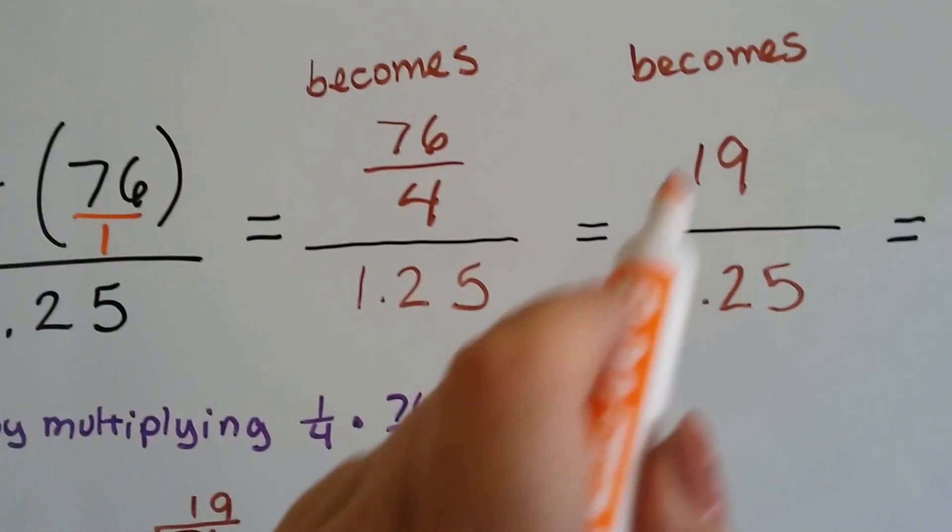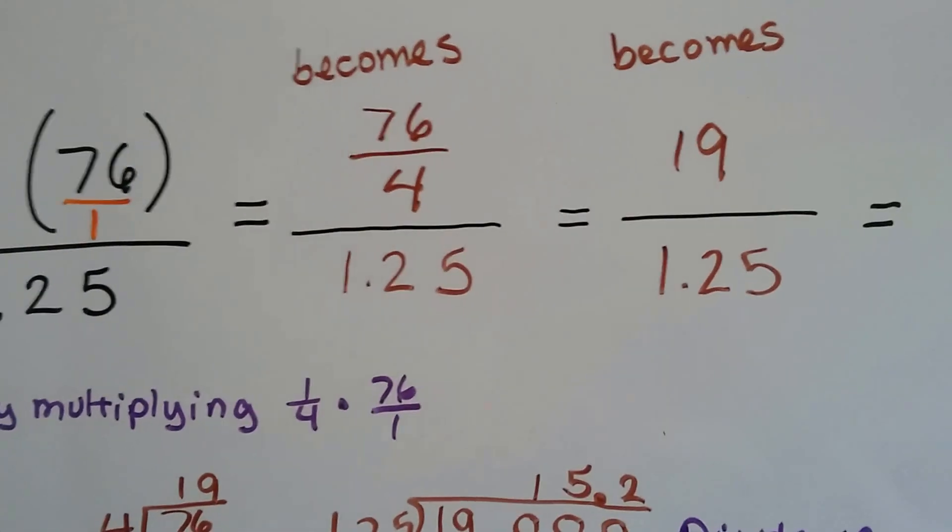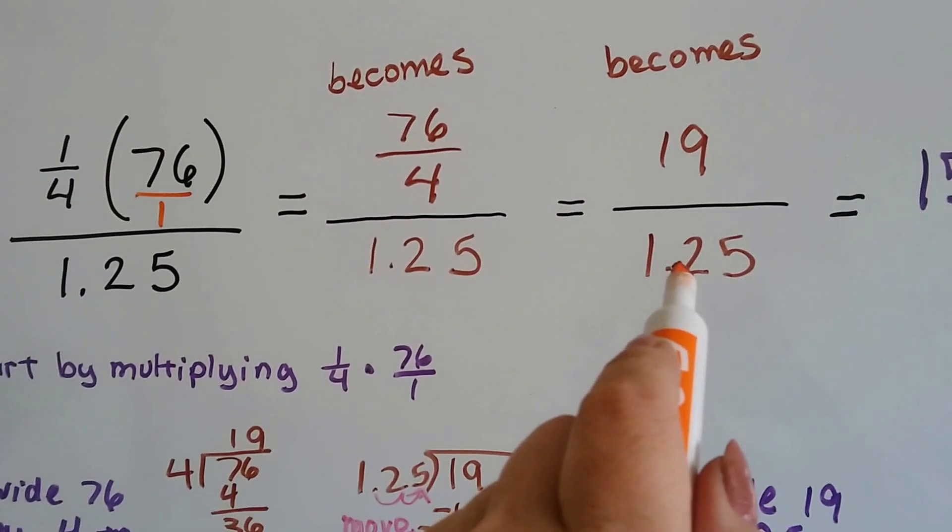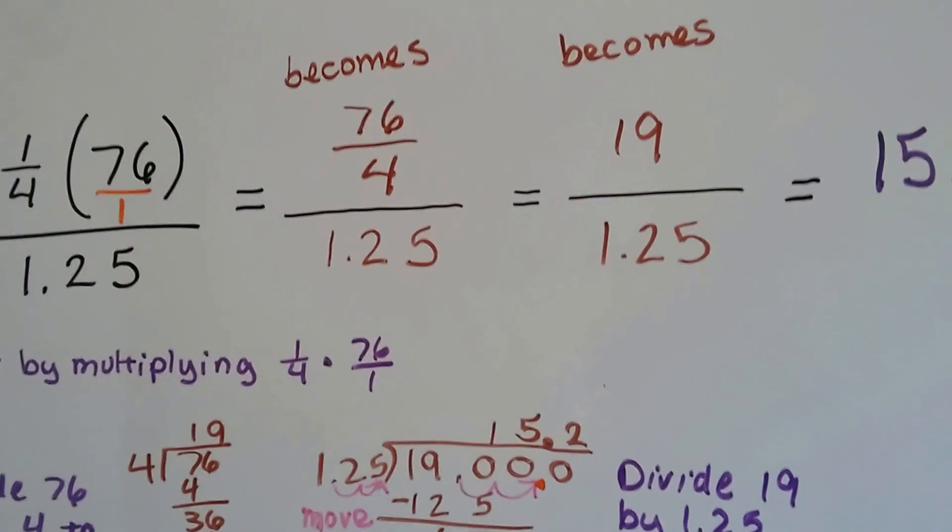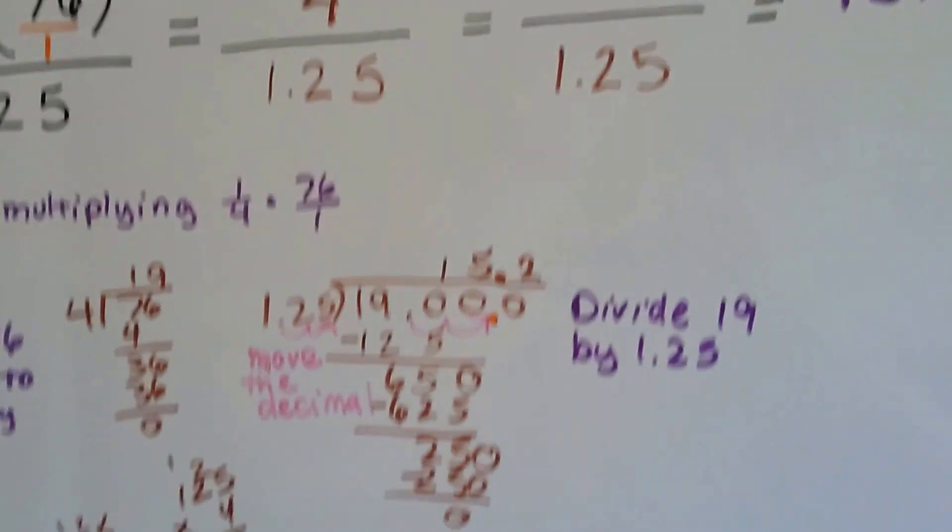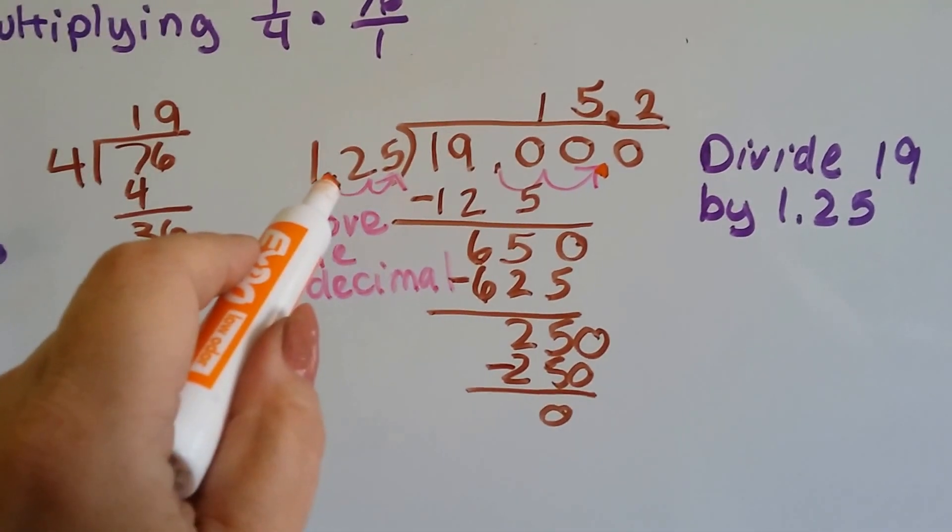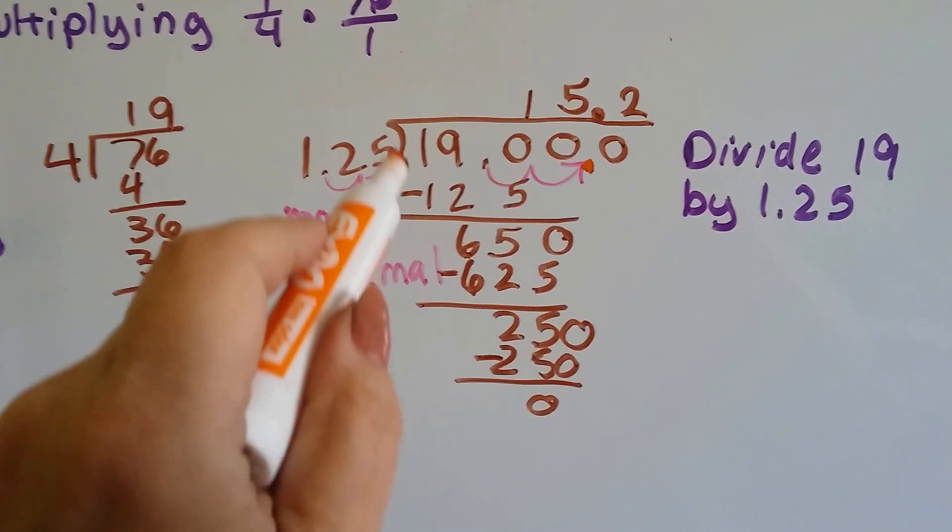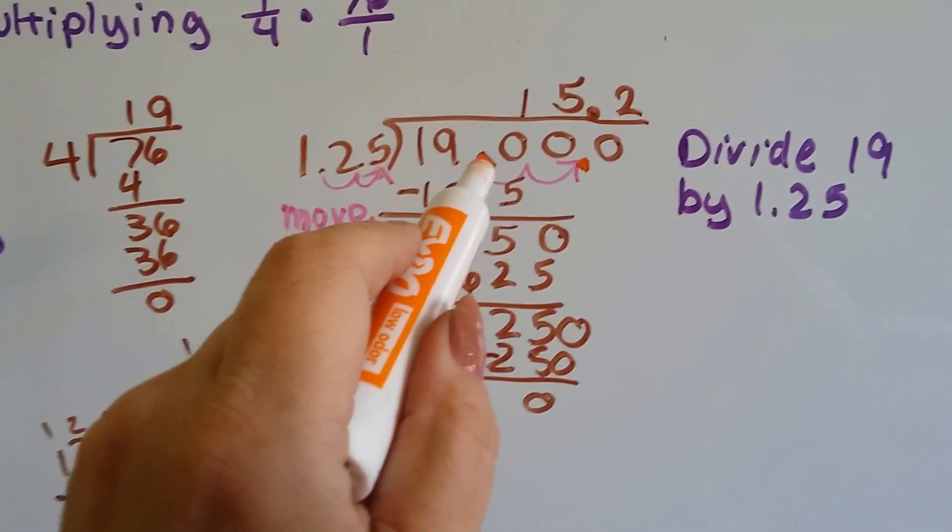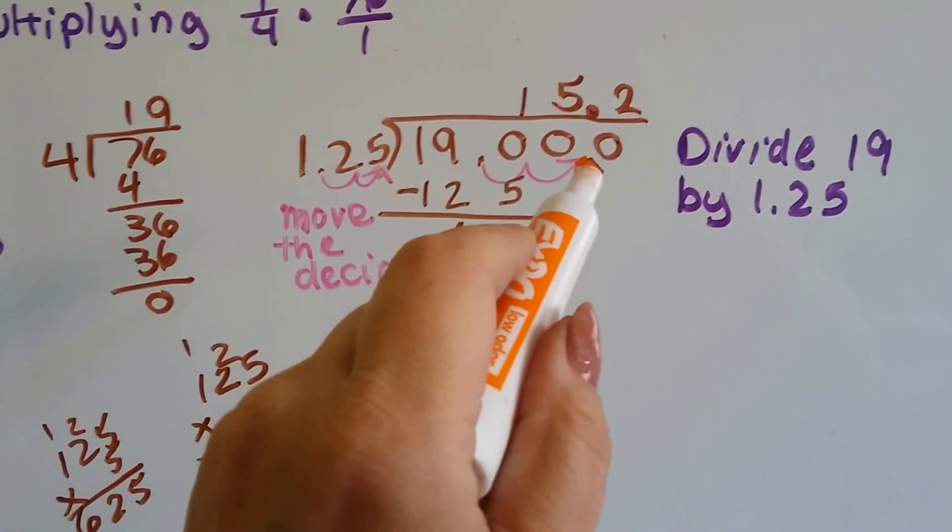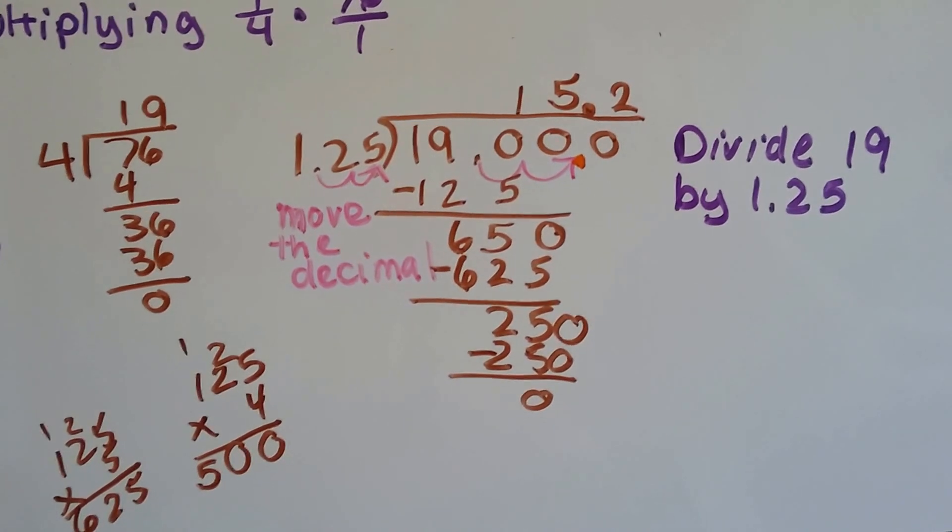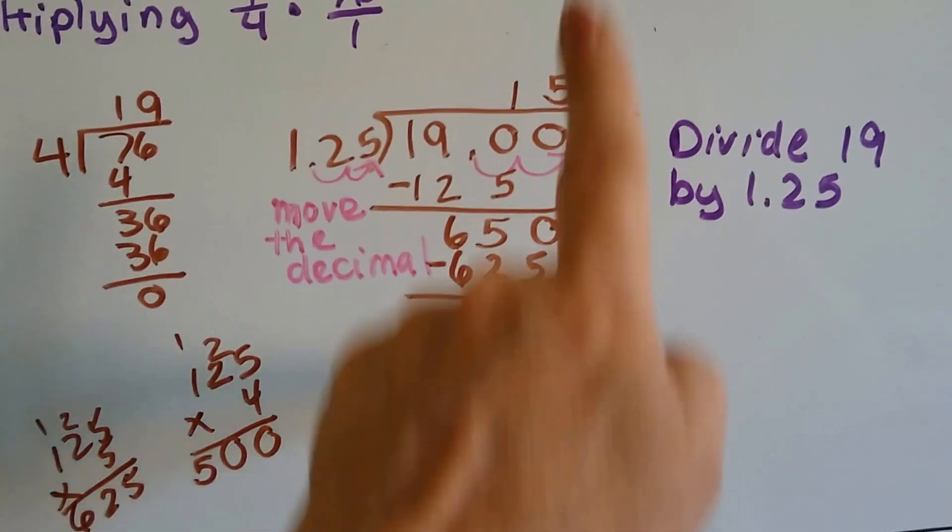Do it real quick on the side. So now it's nineteen over 1.25, and that doesn't look too bad. That looks a lot easier than that. So we divide the nineteen by 1.25. And because there's a decimal point here, we move it over to behind the five, which means we have to do the same thing for the nineteen. We move it over two spots, and then we can bring it straight up into our quotient, right? Because it goes straight up.